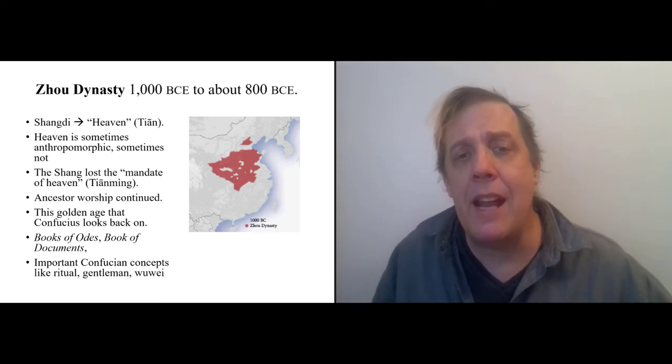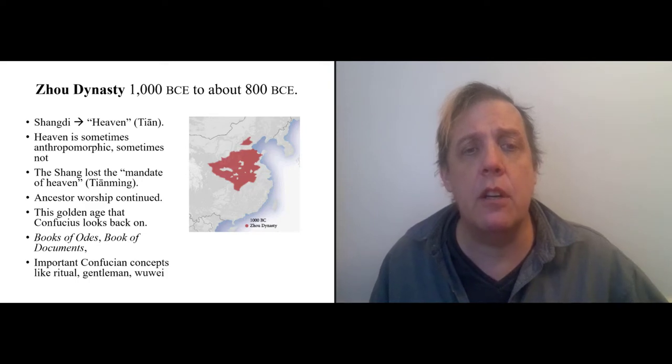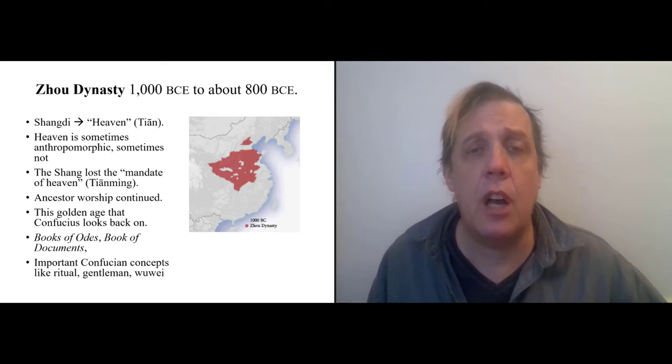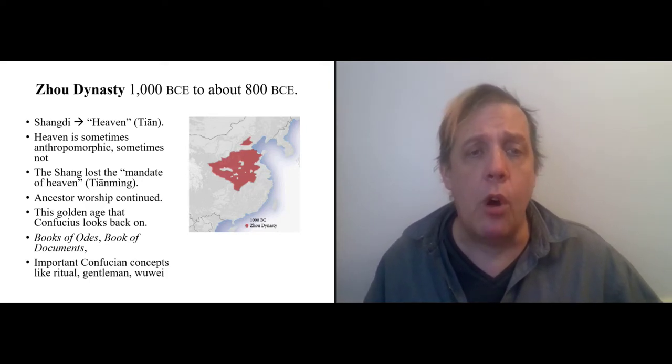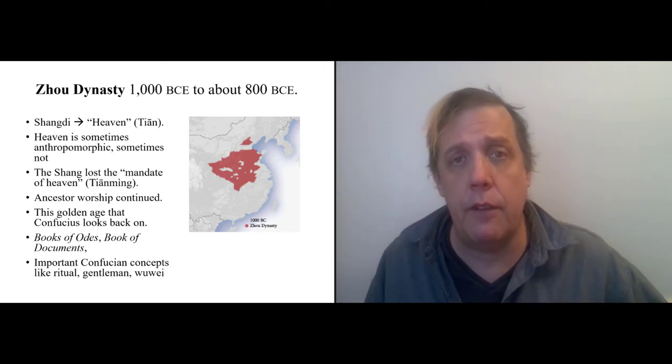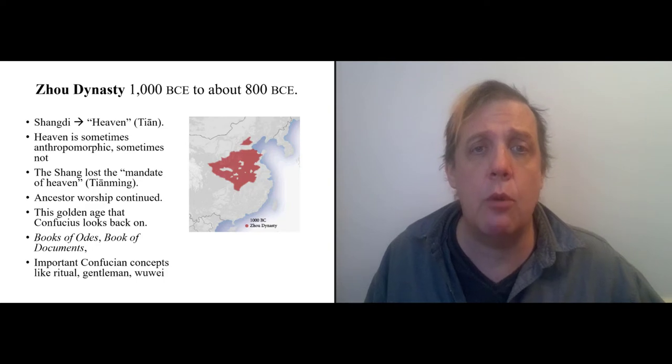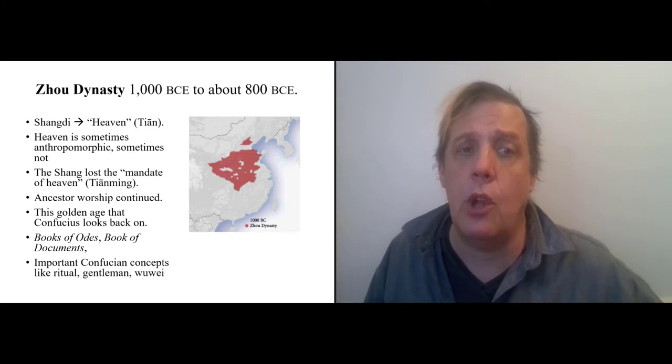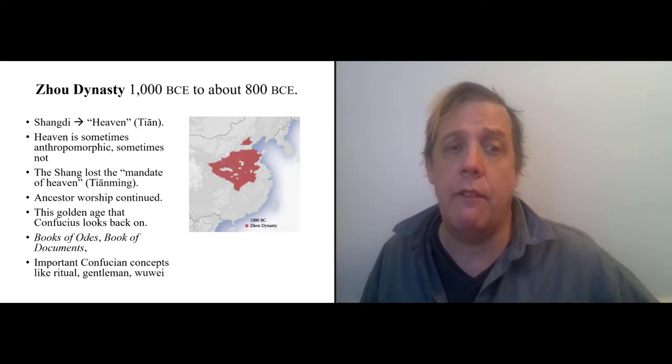And heaven or Tian is sometimes portrayed the way God is portrayed in a lot of the Christian literature as an anthropomorphic figure—that is, it has human-like characteristics. Other times not. But the main thing that happens here is that one role of Tian, of heaven, is to bless earthly rulers, sort of an equivalent of the European divine right of kings. In Chinese, you had the Tian Ming, the mandate of heaven.